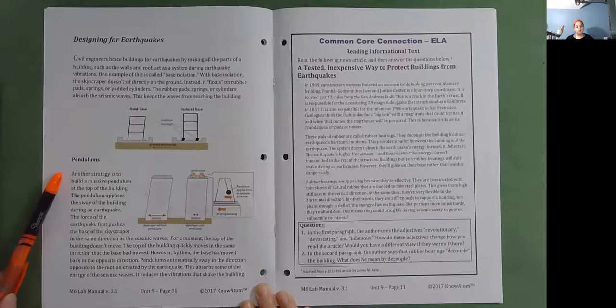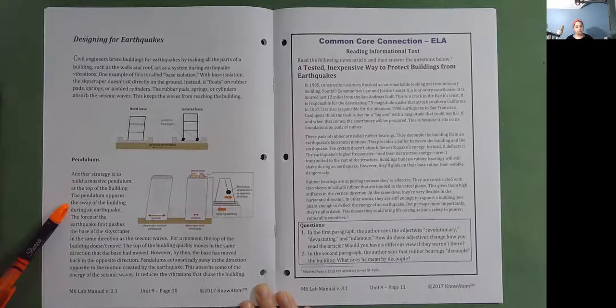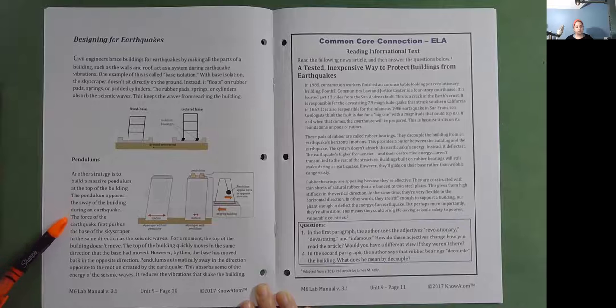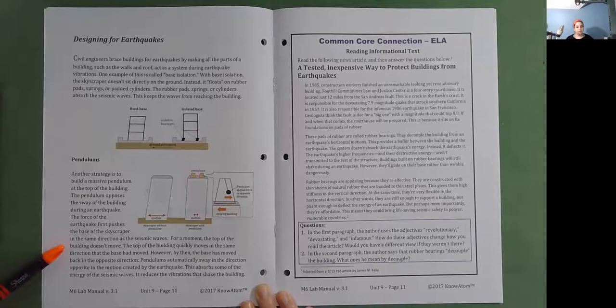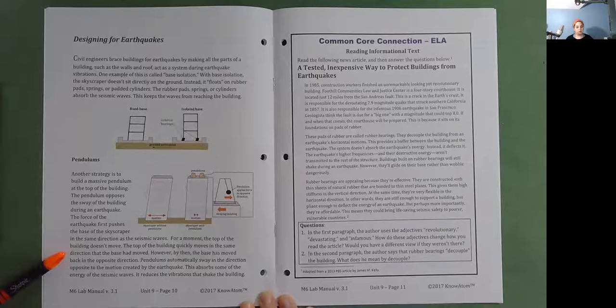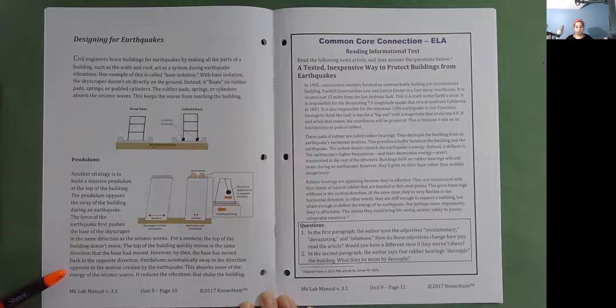Pendulums. Another strategy is to build a massive pendulum at the top of the building. The pendulum opposes the sway of the building during an earthquake. The force of the earthquake first pushes the base of the skyscraper in the same direction as the seismic waves. For a moment, the top of the building doesn't move. The top of the building quickly moves in the same direction that the base had moved. However, by then, the base has moved back in the opposite direction. Pendulums automatically sway in the direction opposite to the motion created by the earthquake. This absorbs some of the energy of the seismic waves. It reduces the vibrations that shake the building.